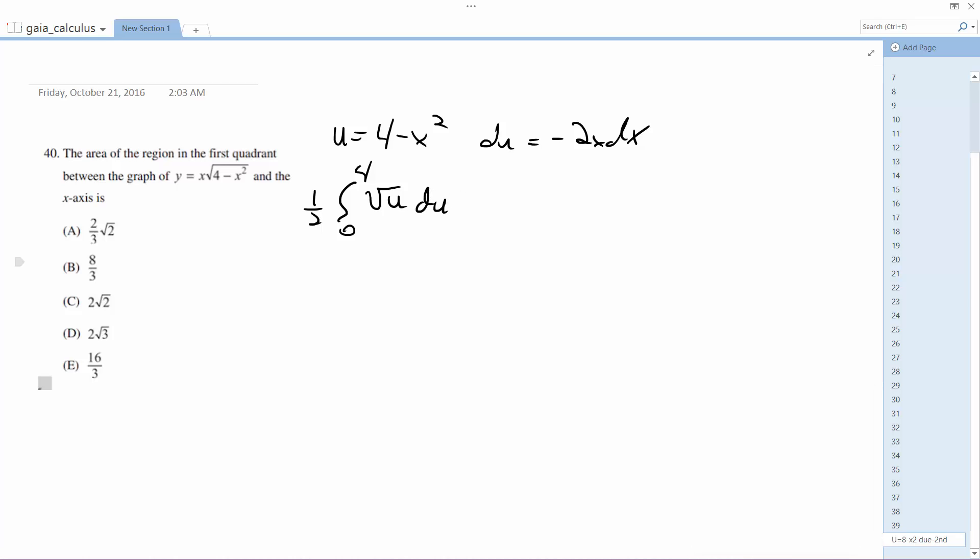Okay, so integrate this. This becomes u over 3 raised to 3 halves from 0 to 4.